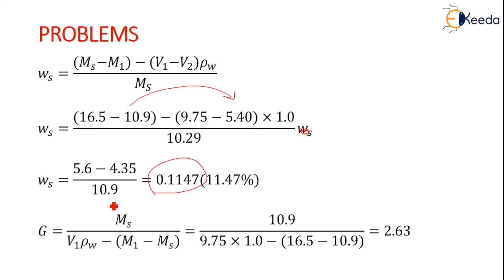To calculate the specific gravity of solids, it is Ms by V1 into ρw minus (M1 - Ms). This formula has to be remembered. We have all the values. Put all the values accordingly and get the value of the specific gravity, that is 2.63. Again it has no units, because numerator and denominator have the same units and they get cancelled.